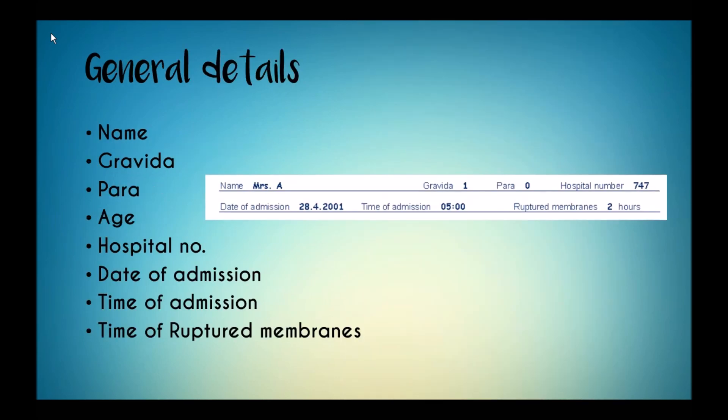The general details include name, gravida, para, age, hospital number, date of admission, time of admission, and the time of rupture of membranes.